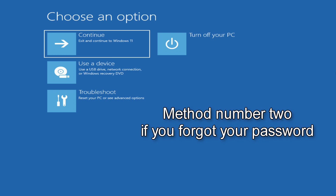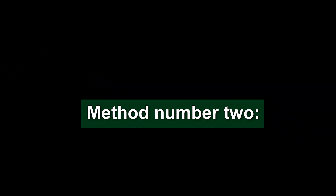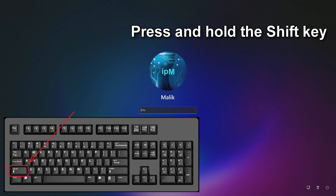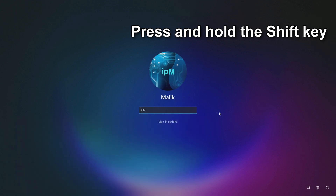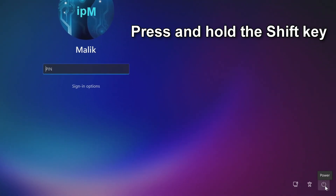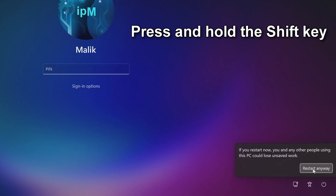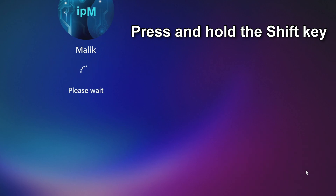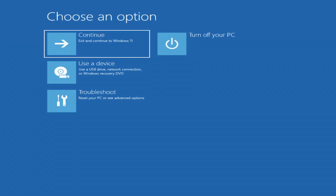The second method is mainly necessary if you forgot the password to log into Windows, and therefore the second method starts from the Windows lock screen. Method number two: press and hold the Shift key on your keyboard, then restart your computer. Please do not release the Shift key. The computer has rebooted and entered the system recovery environment.